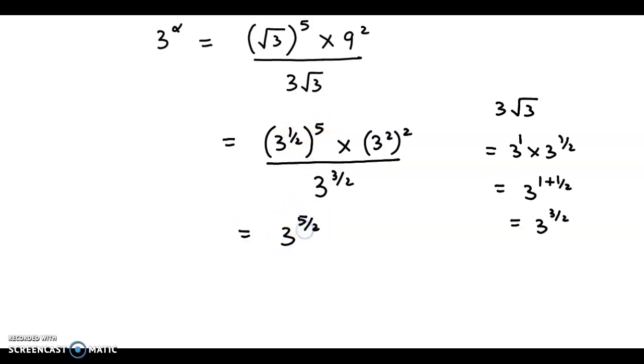So we have 3 raised to 5 by 2 into 3 raised to, now 2 times 2 is 4, divided by 3 raised to 3 by 2.